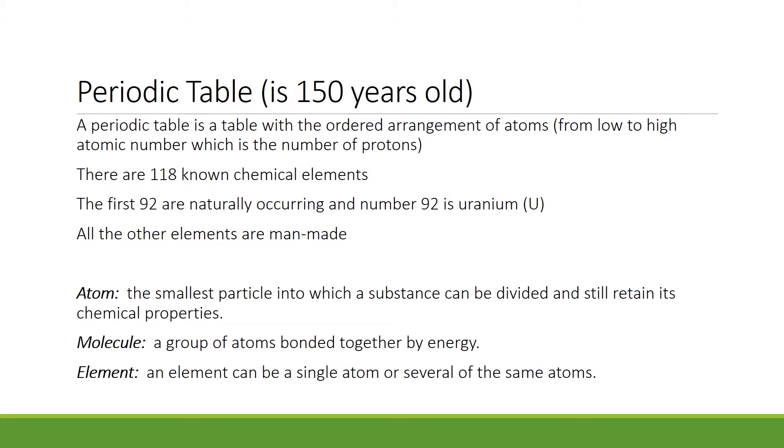Atomic number is the number of protons. In all, there are about 118 known chemical elements. The first 92 elements are naturally occurring, and number 92 is the element uranium, chemical symbol U. All the other elements beyond this are man-made. An element is a substance that cannot be broken into any other substance by ordinary chemical means.